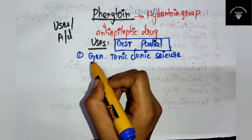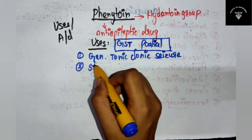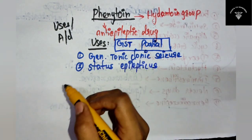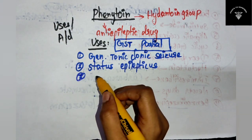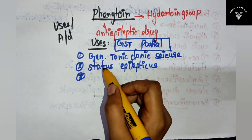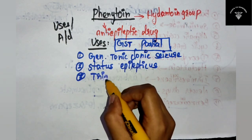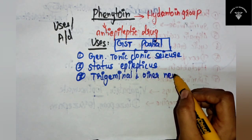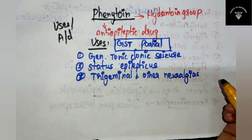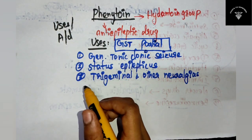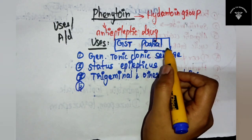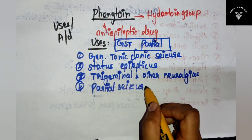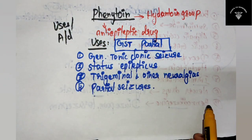S is for status epilepticus. T is for trigeminal and other neuralgias. And 'partial' stands for partial seizures. These are the uses of phenytoin - GST partial.